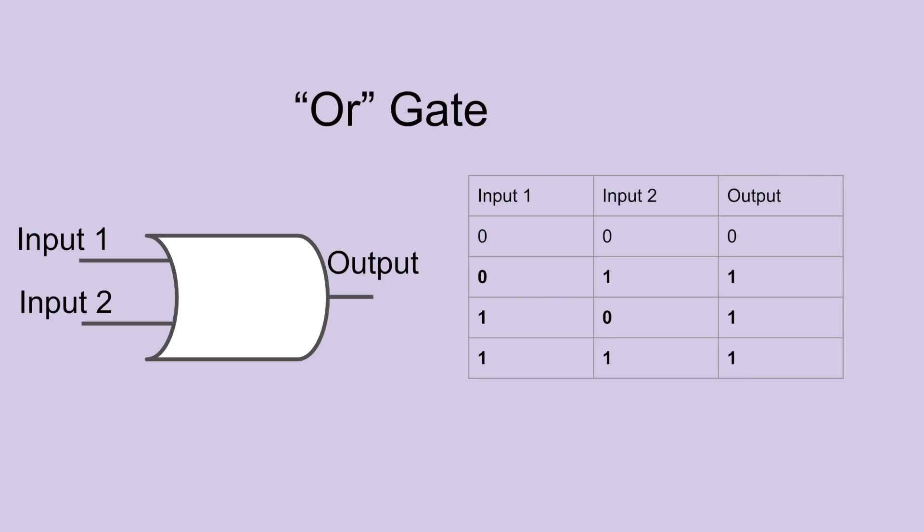The third tool is the OR gate. In this case the output is 1 if either the first input or the second input, or both, are 1. If you're feeling clever, you can pause the video here and try to guess what the circuit might look like.